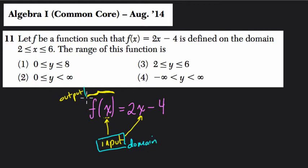So all the different inputs you use is the domain, and all the outputs you have, that's called the range. So in this problem, they're saying f of x equals 2x minus 4 is defined on the domain